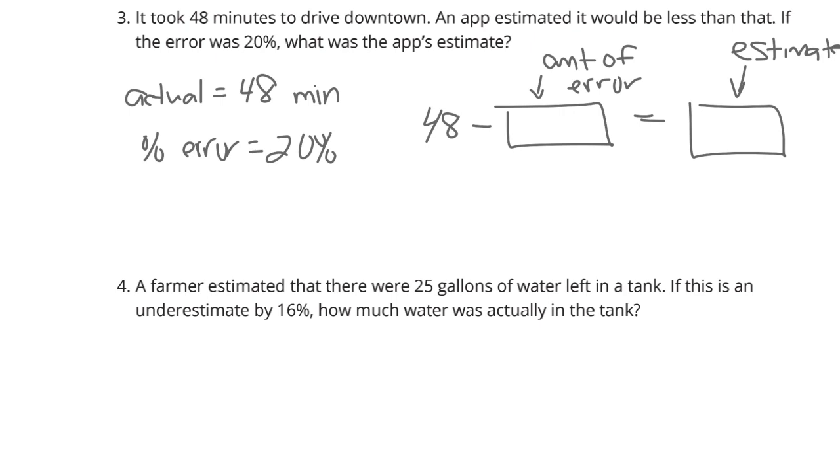This amount of error is 20% of 48. So 48 minus 20% of 48 is 9.6, and that's going to equal the estimate of 38.4 minutes. And we're subtracting because it said it was going to be less than it actually took.